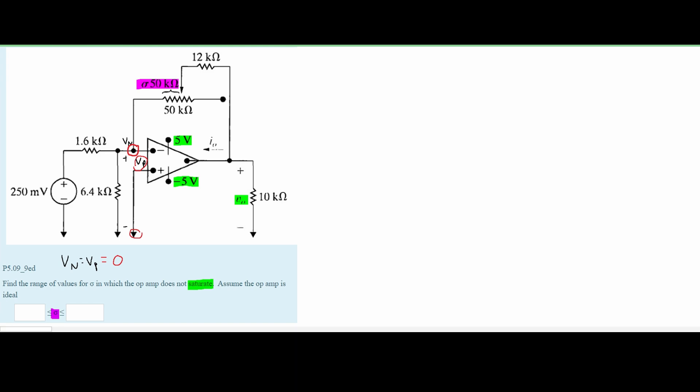When we're looking at this, first we're going to have our Vn, and we know we have to deal with this 250 millivolts going into it, so we're going to have minus 250 millivolts over the 1.6 kiloohm resistor. After this, we have this 6.4 kiloohm resistor, and we know that over it, we're going to have our Vn over 6.4 kiloohms of resistance.